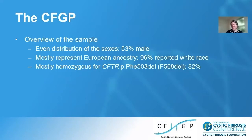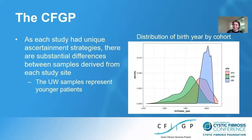About half the sample is male and half is female. Most samples appear to have European ancestry, with 96% reported to have white race using the patient registry data supplemented by study records. Most subjects within the study are homozygous for the F508del variant in CFTR. Each of those studies had their own ascertainment strategies and study designs, so we do see substantial differences across some important variables within the CFGP.